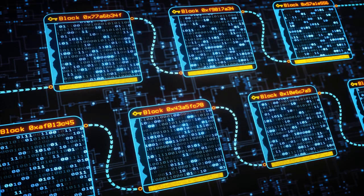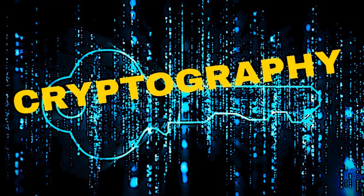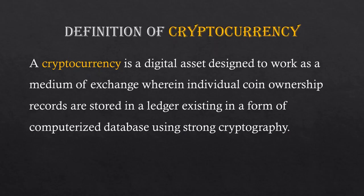There are basically two types of blockchain: centralized blockchain and decentralized. Cryptography is the process of converting ordinary plain text into unintelligible text and vice versa. It's a method of storing and transmitting data in a particular form so that only those for whom it is intended can read and process it.